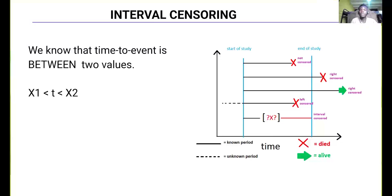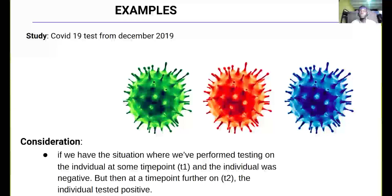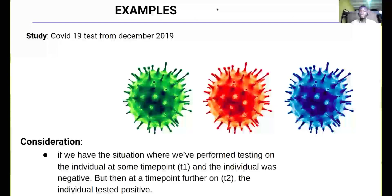We also have interval censoring. Interval censoring is when we know that the time to event is between two values — between X and Y — but we don't know the exact time. For example, looking at a COVID-19 study from December 2019: if we test an individual at time T1 in 2019 and the individual was negative, but then in 2020 the individual tested positive, we don't know the exact time they got infected. We would say the person had the virus between 2019 and the date they tested positive, but we don't know the exact time. This is an example of interval censoring.